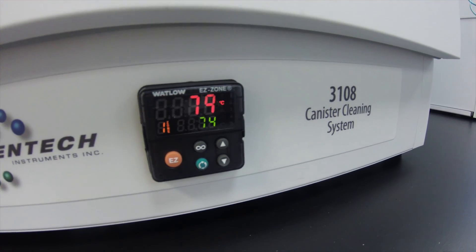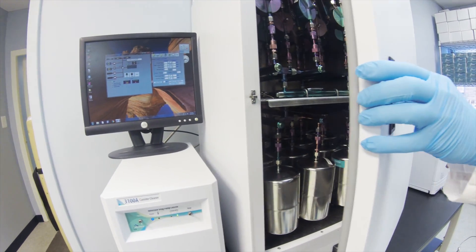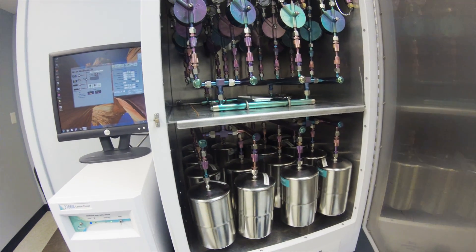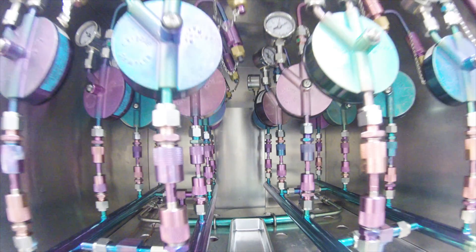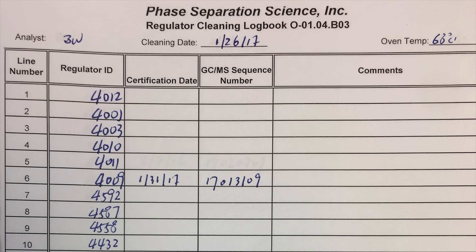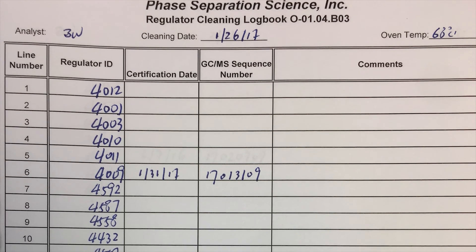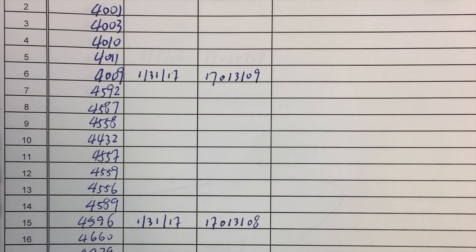Sampling equipment is cleaned for reuse in a computer-controlled system. This system evacuates and refills the canisters and flow controllers with ultra-pure nitrogen multiple times at high temperature to eliminate residual VOCs. Batch certification of flow controllers and canisters ensures the equipment is clean enough for use.